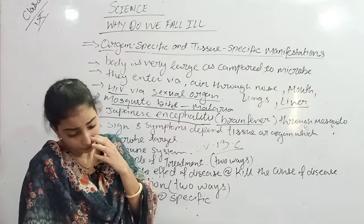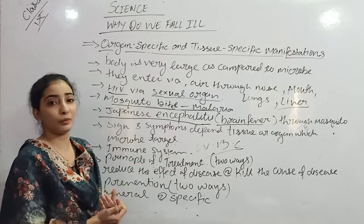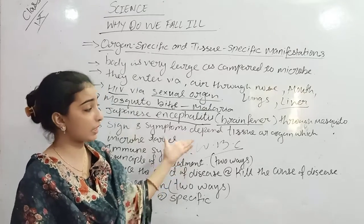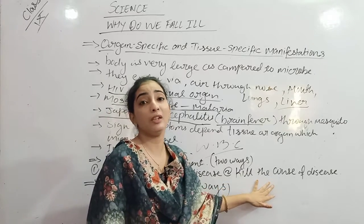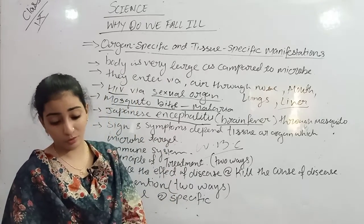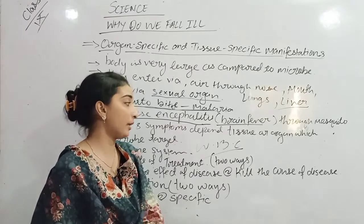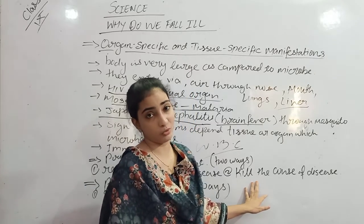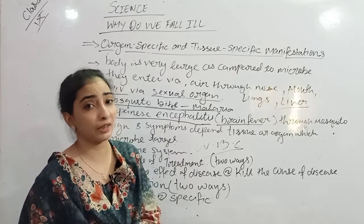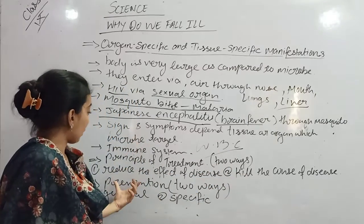The approach is to first reduce the effect of the microbe - whether virus, bacteria, or protozoa - so the effect decreases, and then take medicines that will finally kill the virus or bacteria in our body. Antiviral medicines are stronger than antibacterial medicines because viruses replicate very rapidly in our body compared to bacteria.